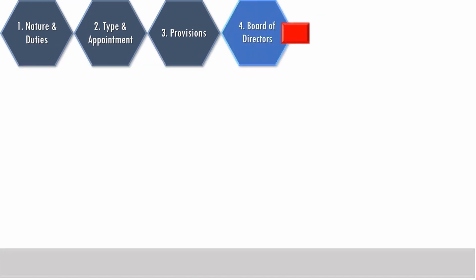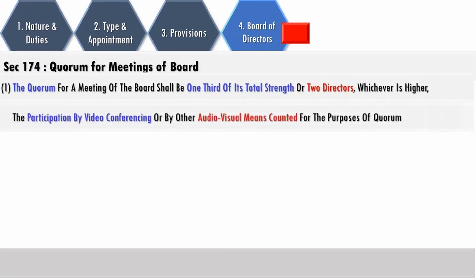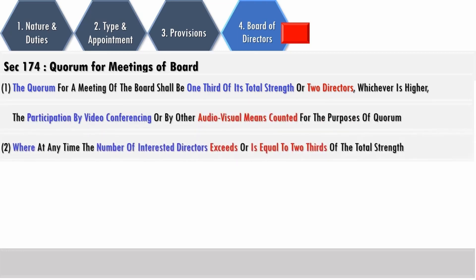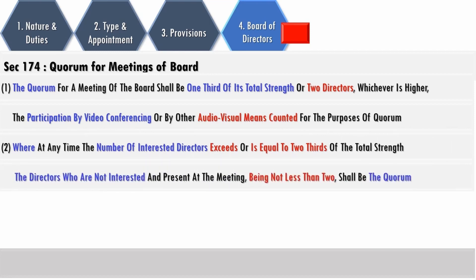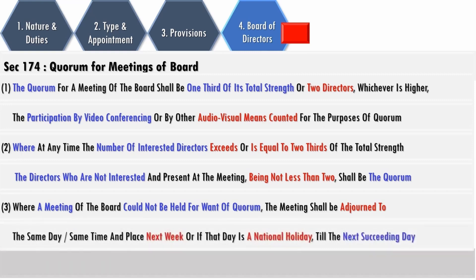Quorum in respect of a meeting of the board of directors shall be one-third of its total strength or two directors, whichever is higher. Participation by video conferencing or audio-visual means is included for purposes of quorum. Where at any time the number of interested directors exceeds or is equal to two-thirds of the total strength, the directors who are not interested and present at the meeting, being not less than two, shall be the quorum. Where a meeting of the board could not be held for want of quorum, the meeting shall be adjourned to the same day, same time and place in the next week, or if that day is a national holiday, till the next succeeding day.